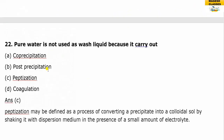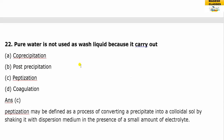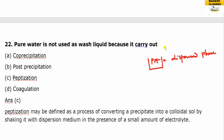Question 22: pure water is not used as a washing liquid because it causes peptization. Peptization is the process where, by adding a solvent to the precipitate, a colloidal solution is formed — the precipitate disperses into a colloid (dispersed phase).